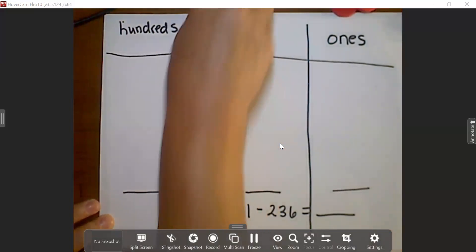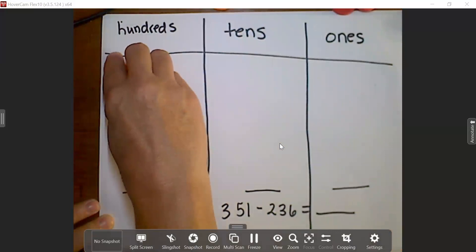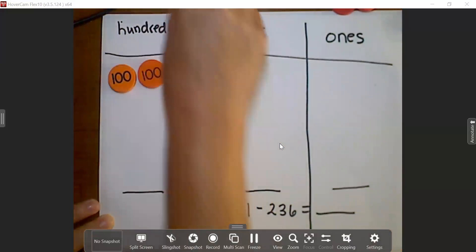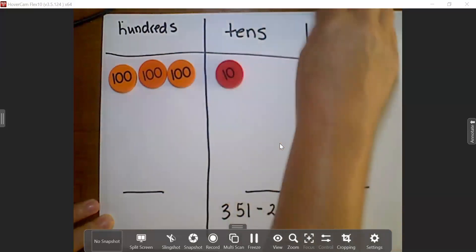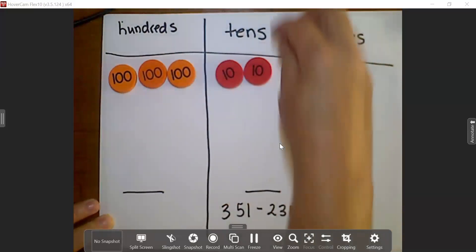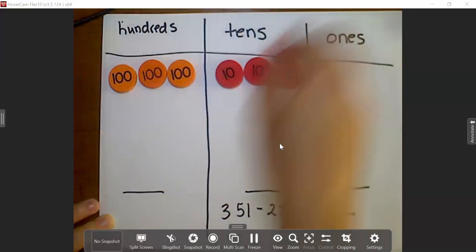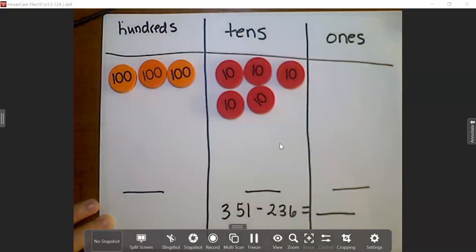So I'm going to build 300. I'm going to have five 10s: 10, 20, 30, 40, 50, and 1.